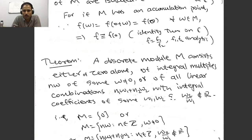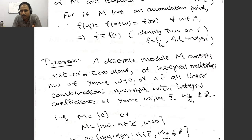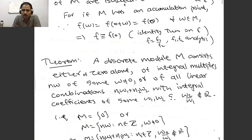Let us understand some properties of M. First, all points in M are isolated. This is because f is a meromorphic function on the whole complex plane — a quotient of two analytic functions — so we can apply the identity theorem. Since f(z + ω) = f(z) for all ω in M, if there were an accumulation point, f would be identically constant. So if f is not constant, all points in M are isolated.